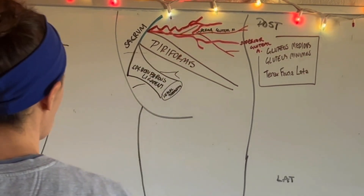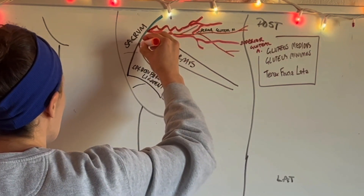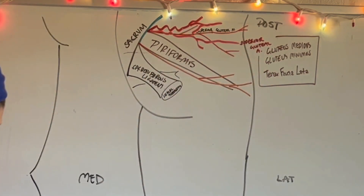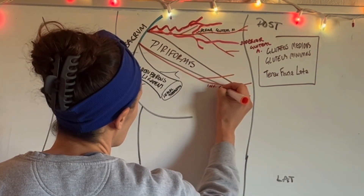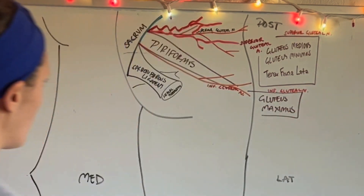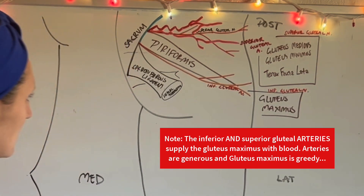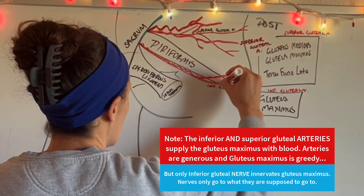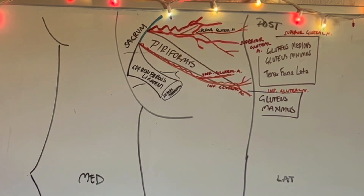Inferior gluteal nerve comes out of the greater sciatic foramen below the piriformis and goes straight to a very large muscle. It's going to cover this entire area — inferior gluteal nerve innervates gluteus maximus. The inferior gluteal artery runs alongside it, branching widely. They share the same name and run together.